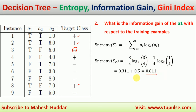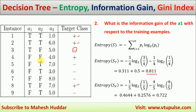Similarly, we need to find the entropy of false examples. There are 5 false examples. Out of that, 1 is positive and the remaining 4 are negative examples. So the entropy of the false data set is equivalent to minus 1/5 log(1/5) base 2 minus 4/5 log(4/5) base 2. If you solve it, you will get the entropy of false examples as 0.722.